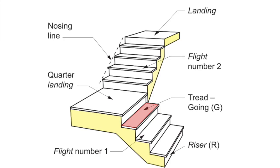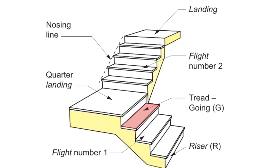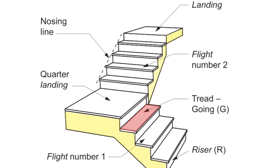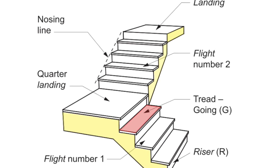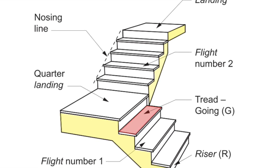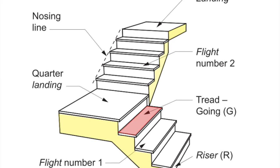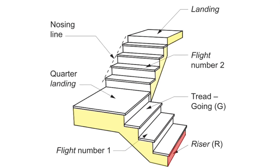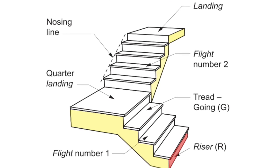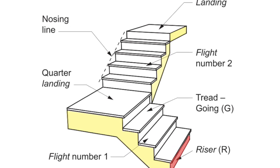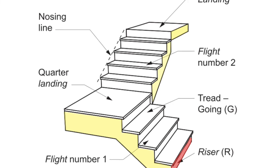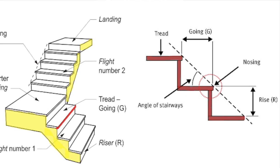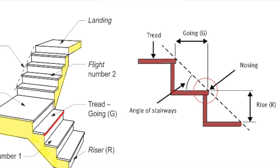In a staircase, each step is composed of a tread and a riser. The part of the staircase that is stepped on is called the tread. The vertical portion between each tread on the stair is called the riser. Each part of the tread that protrudes over the riser beneath is called the nosing.